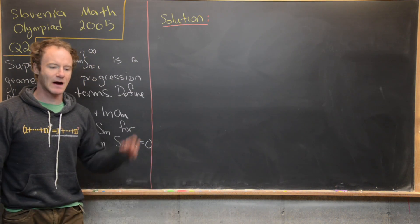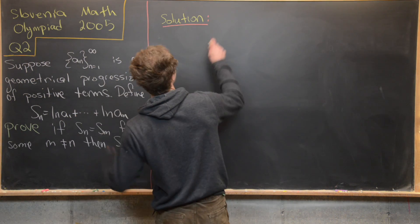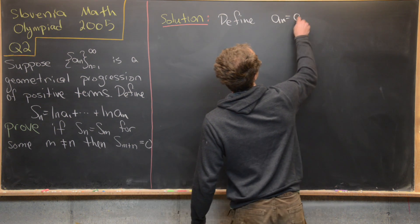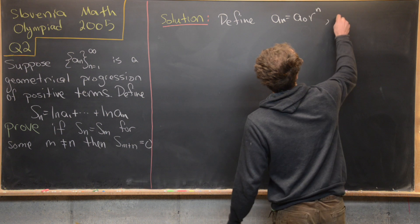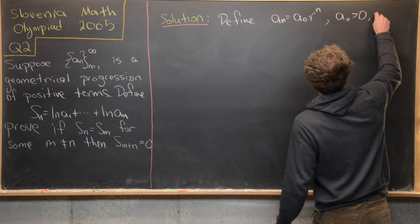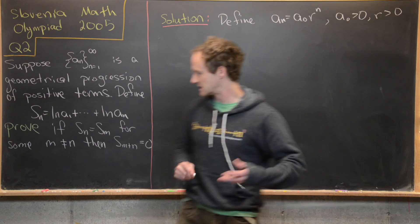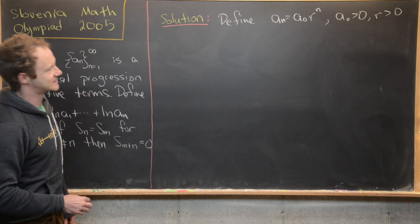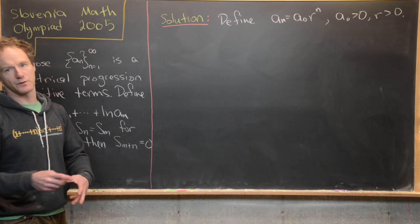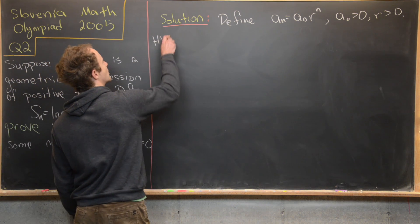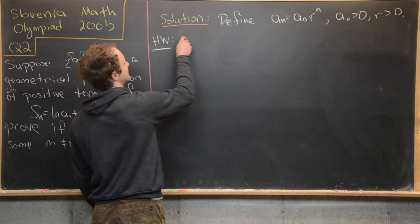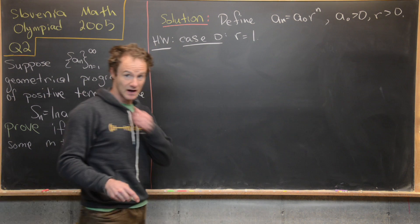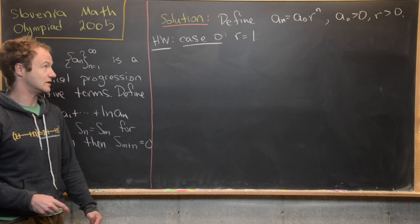Now we're ready to look at a full solution. Just as in the first hint, I'll define a_n to be a₀ times r to the n, where a₀ is positive and r is also positive, because the sequence consists of positive terms. Before the main solution, there is a simple special case worth noting as homework: when r equals 1, meaning the common ratio of the geometric progression equals 1.